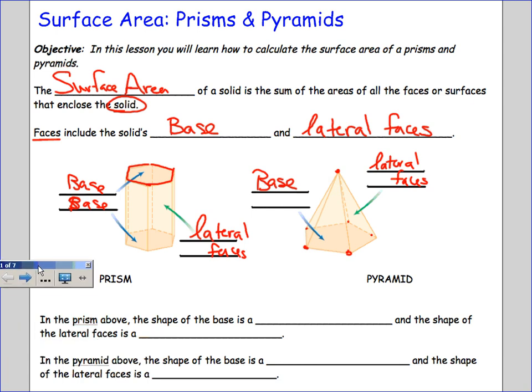In the prism above, the shape of the base is a hexagon. In the pyramid above, the shape of the base is a pentagon. The shape of the lateral faces of the pyramid is a triangle.